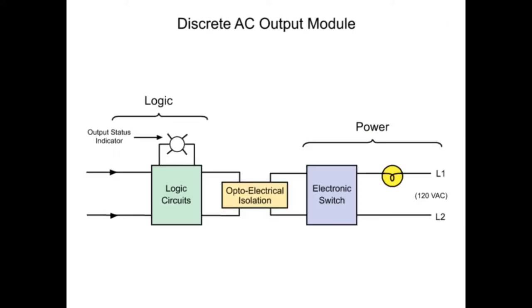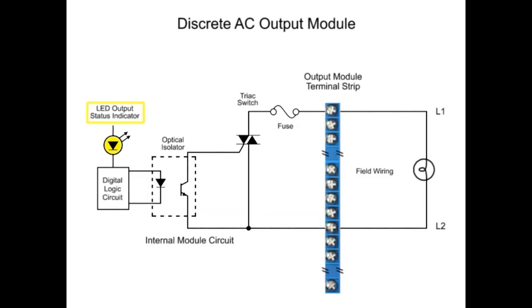For the AC output module, the circuit is comprised of a power section and logic section, coupled by an isolation circuit, similar to the input module, but in reverse order. When the output status is commanded from the PLC program, voltage is transmitted to the LED of the optical isolator.